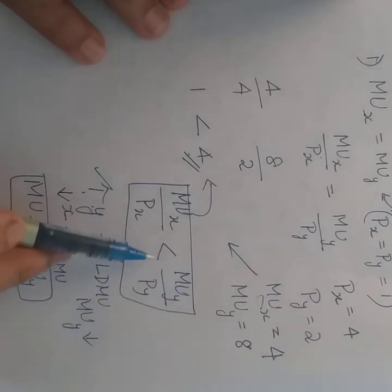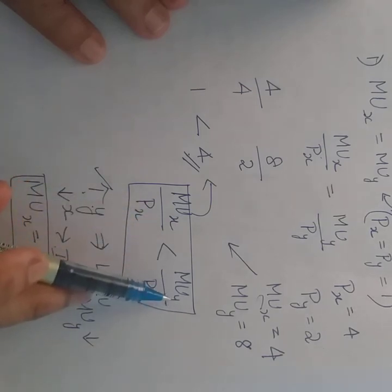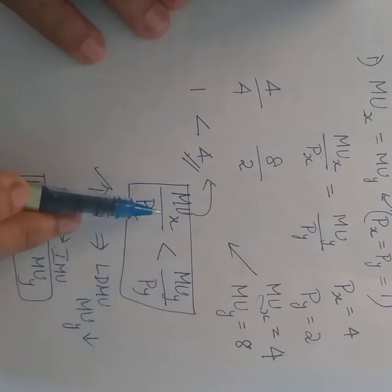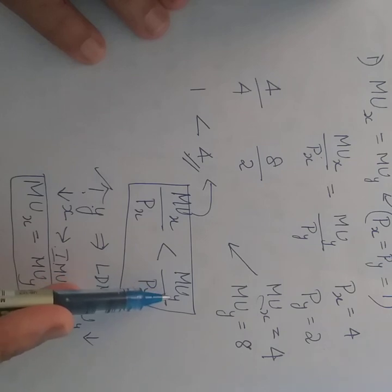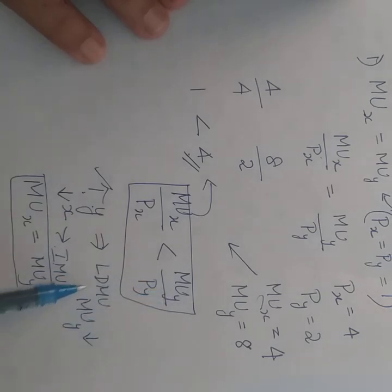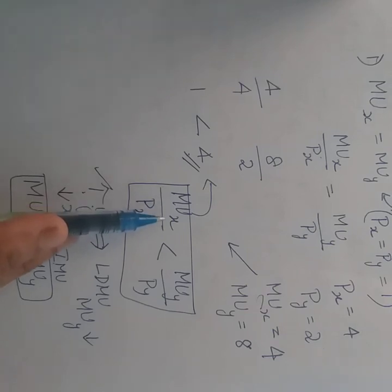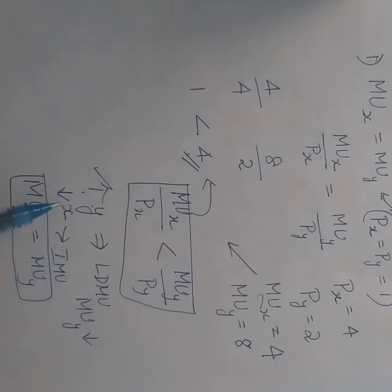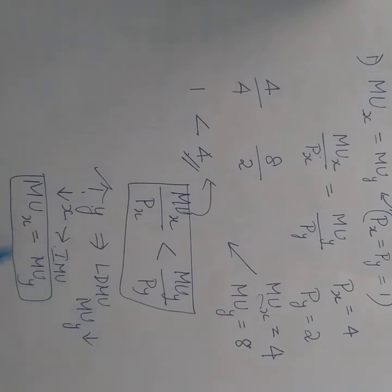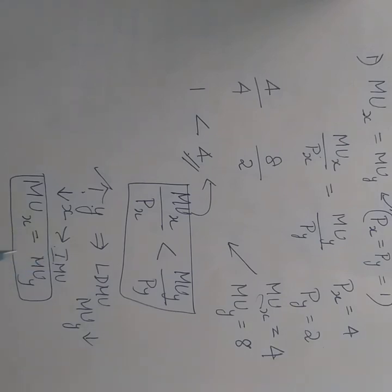In case of disequilibrium where marginal utility of Y is more than the marginal utility of X, there will be increased consumption of Y which reduces the marginal utility derived from Y. And since units of X are used lesser and lesser, there will be increasing marginal utility in the case of X. Ultimately, the fall in MU of Y and increase in MU of X will bring the consumer back to marginal utility of X being equal to marginal utility of Y. That is why this is the only possible equilibrium in the two-commodity case.